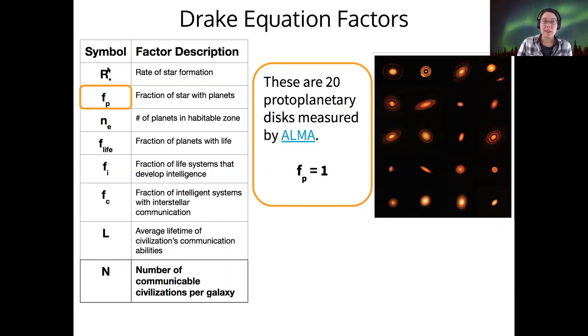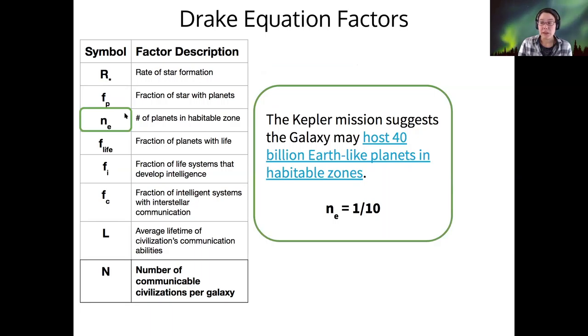So once we know how many stars there are, how many of those have planets, we need to know how many of those planets are in the habitable zone. And as you've seen, the Kepler mission is on the case. The galaxy might have up to 40 billion Earth-like planets in the habitable zone. So as an optimistic estimate, we're going to say that this factor is about a tenth. So out of all the planets, fractions of stars with planets, the number of planets in each solar system that are in the habitable zone, we'll put it one tenth.